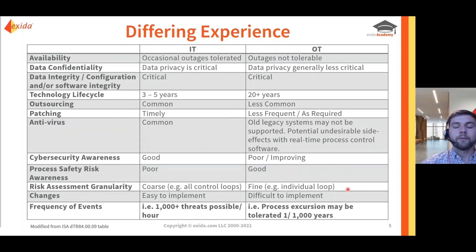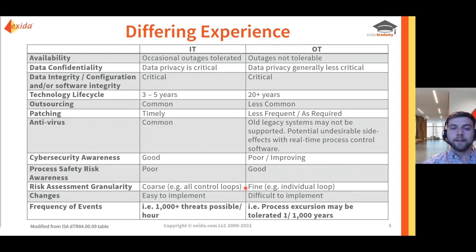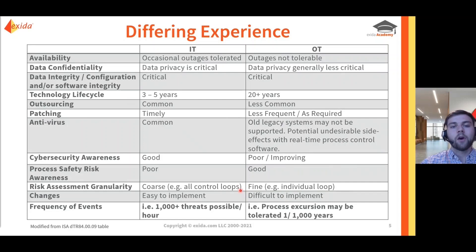We can also think about the level of granularity in risk assessments. When an OT cybersecurity risk assessment is done, they're really trying to understand the impact at an individual loop level — understanding the most critical parts of the system and what process excursion could be caused by an attack. An IT risk assessment would typically take a much coarser view and look at the OT system as one area, covering all control loops together, which may miss scenarios that would be identified at a finer level of detail.